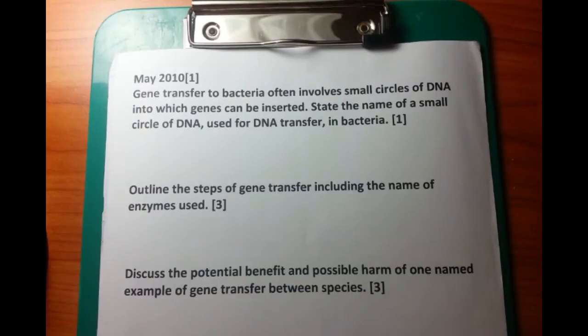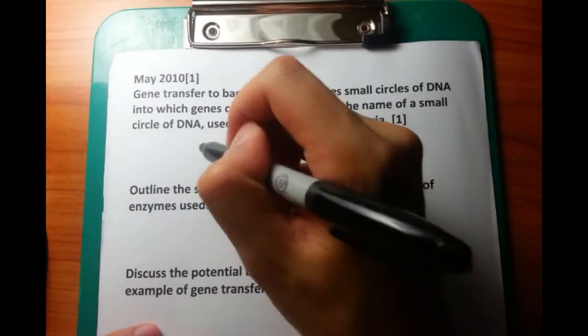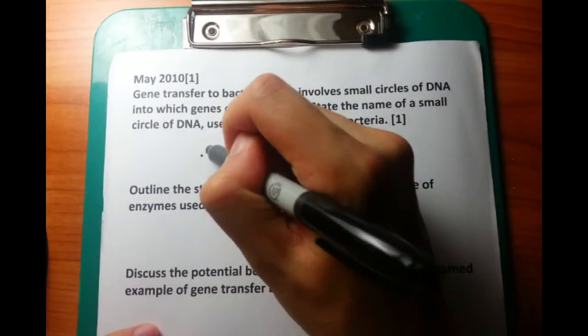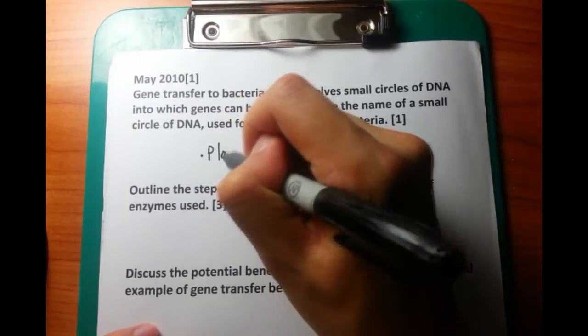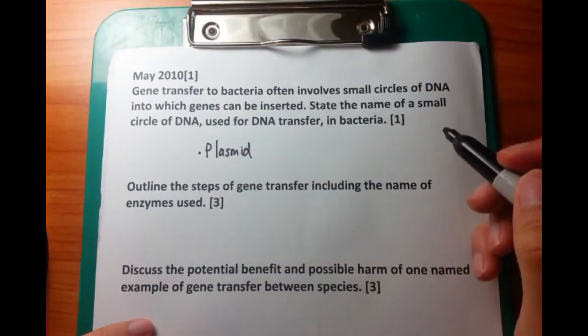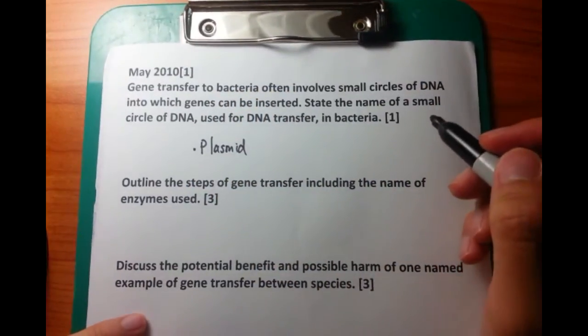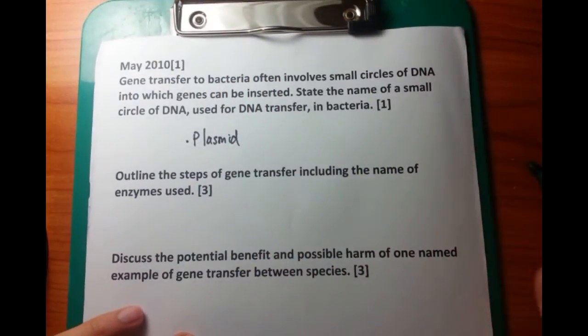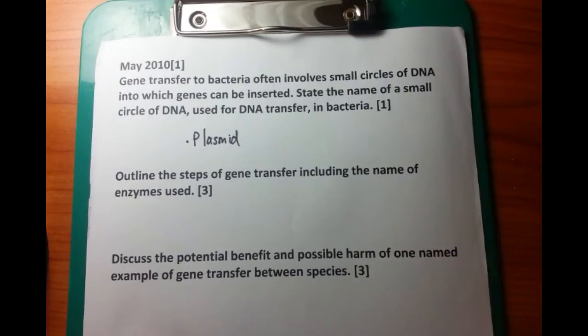A plasmid is a round circular piece of DNA which can be modified so that genes can be inserted into it. You can use this to start producing proteins artificially.